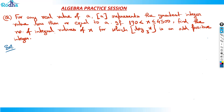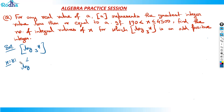The idea behind this question is: I want log of x base 3 to be an odd positive integer. So x should be related to powers of 3. For example, if x = 81, which is 3 raised to 4, then log of 81 base 3 = 4 times log 3 base 3 = 4.